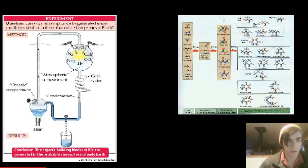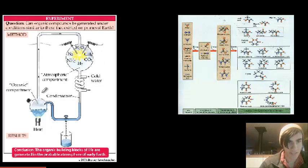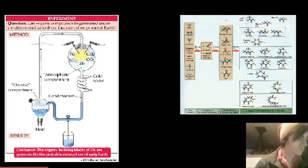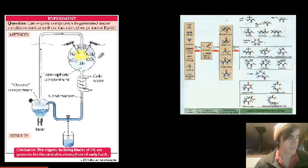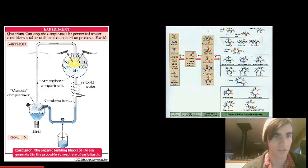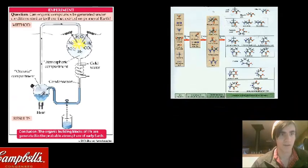We have the oceanic compartment, which is just water, halfway filled up. Then we've got the atmospheric compartment, which is filled with a bunch of gases — hydrogen gas, methane, carbon monoxide, carbon dioxide, ammonia, and nitrogen. And then you've got H2O water down in the oceanic compartment.